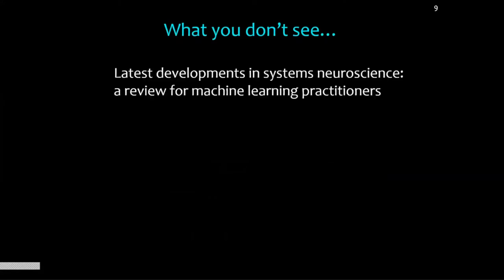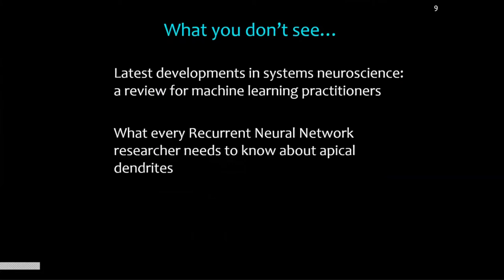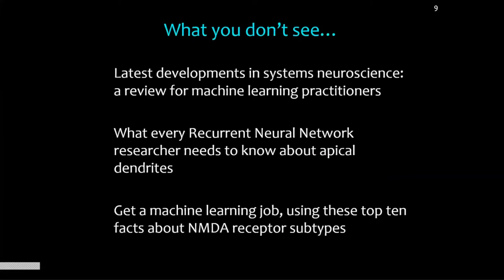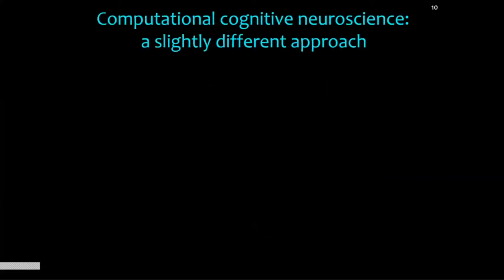Here's the kind of stuff you don't see: 'Latest developments in systems neuroscience — a review for machine learning practitioners.' 'What every recurrent neural network researcher needs to know about apical dendrites.' 'Get a machine learning job using these top ten facts about NMDA receptor synapses.' Nobody does this. If neuroscience was really still leading the way, these would be real papers. I say this not out of mockery but out of sorrow — I think the people doing the best work for understanding cognitive processing these days are people in machine learning labs, in my personal opinion.